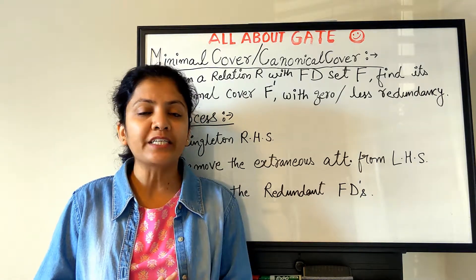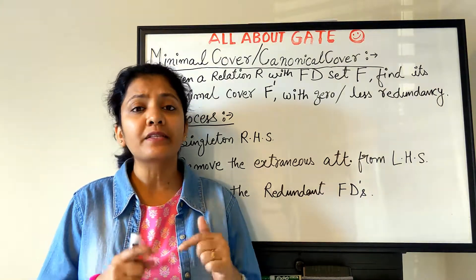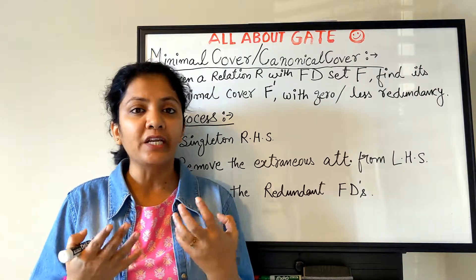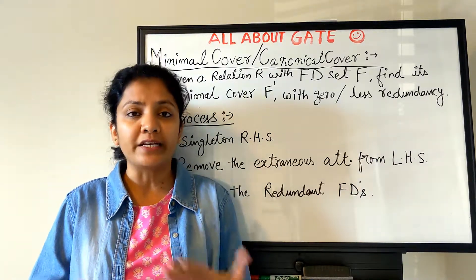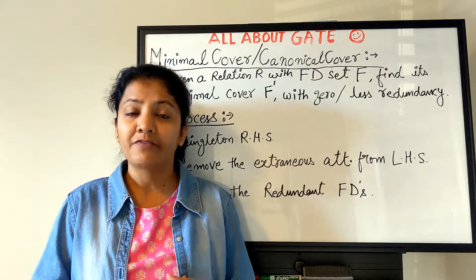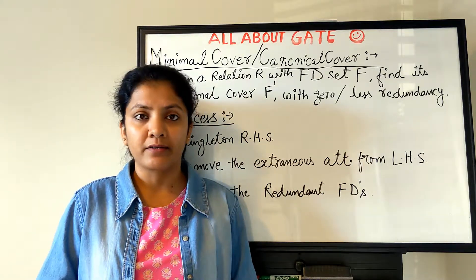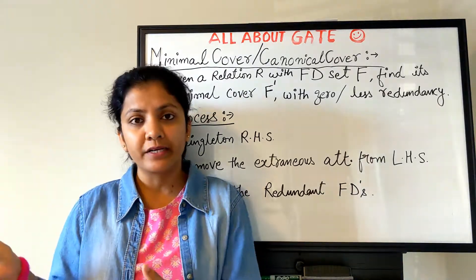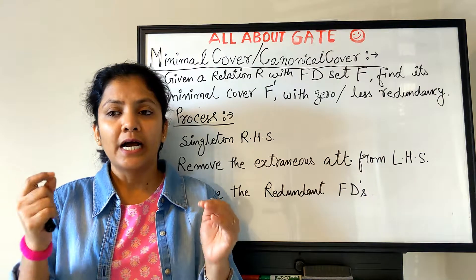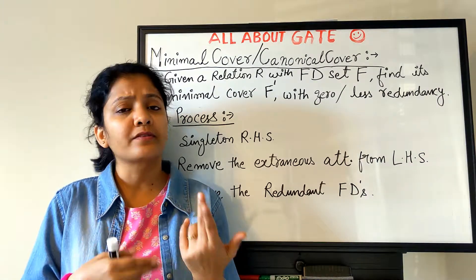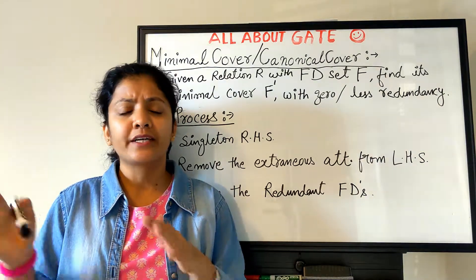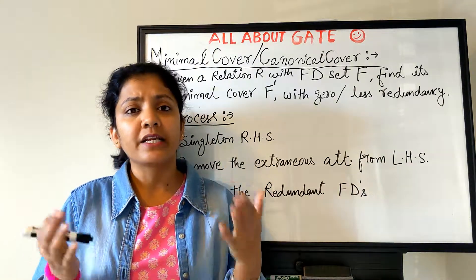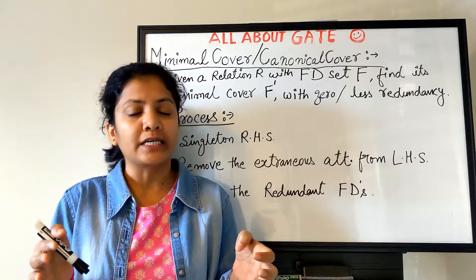Whenever an update is performed over the relation schema R, the database system has to ensure that none of the functional dependencies are violated with the new update. If there is any violation, the update has to be rolled back. Suppose the FD set is quite large — it has a lot of functional dependencies — and every time the database system has to check for a violation, it has to check all the FDs. Is there any way we can reduce that FD set to a smaller set?